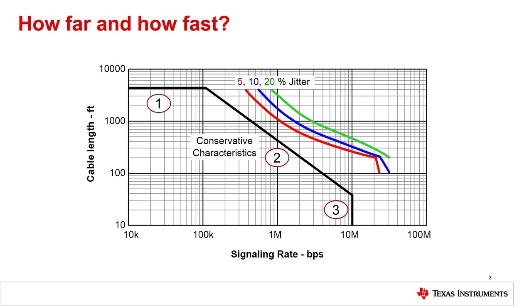This slide provides a conservative look at communication length in relation to data rate. Notice that there are three points labeled beneath the dark black line.